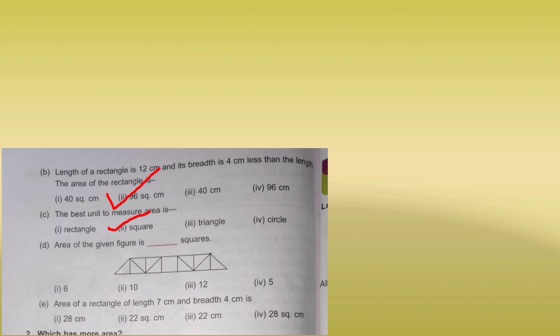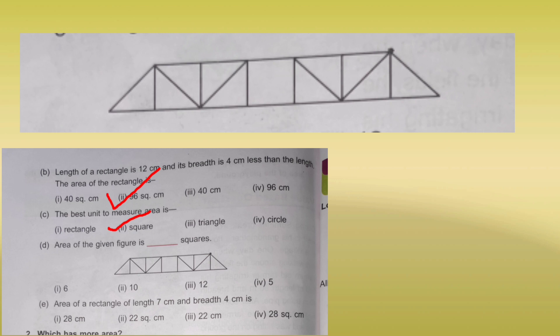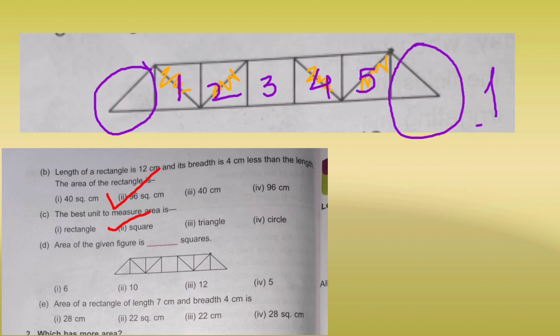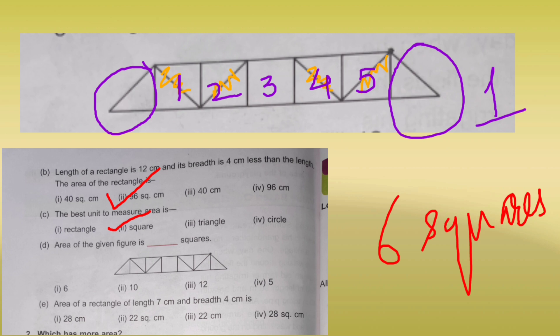Now, for the area of the given figure — the figure has extra lines in between to confuse you. We erase those extra lines and count the squares. We count: 1, 2, 3, 4, 5 complete squares, plus a half triangle on the left side and a half triangle on the right side. Those two halves make one complete square, so 5 plus 1 equals 6 squares. Area equals 6 square units.